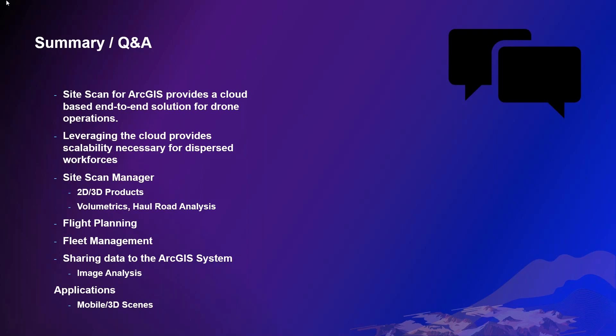On thermal infrared: Site Scan can process RGB and thermal images together and display them in Site Scan Manager, and some thermal sensors are supported by the Site Scan Flight app. On terrain following for vertical flights: terrain follow can be used in every flight mode. The only exception is the inspection flight mode, which is a manual flight mode — you can display terrain data but you're piloting manually. In all other flight modes, terrain follow can be used.